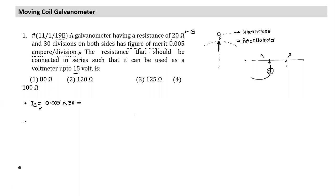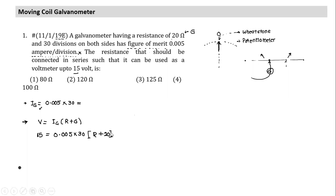Once you understand the question, it is extremely simple. The only new term was 'figure of merit.' Range = IG × (R + G). We plug in values: 15 = 0.005 × 30 × (R + 20), giving R = 80 ohms. This is a fairly simple question.